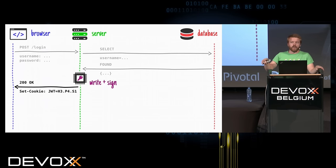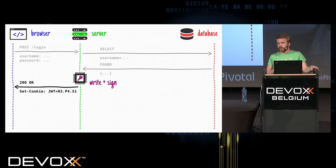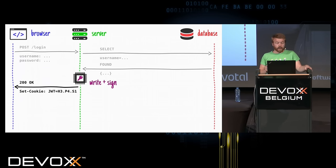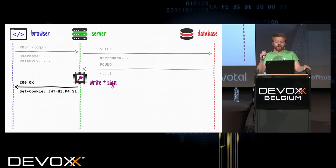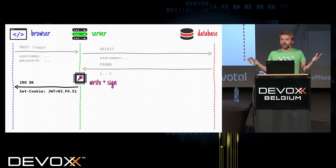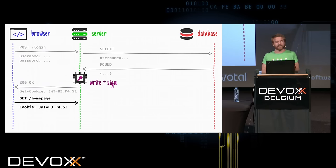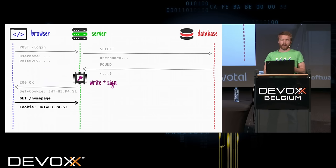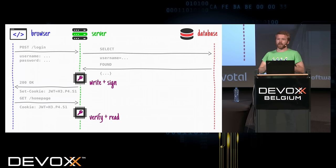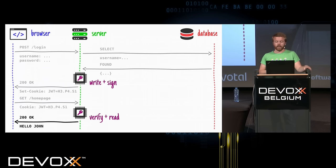I can use JWT with cookies? So all those articles were not that great. Yes, you can. What does a browser do when it has cookies? I'm a browser, what do I do? I send the cookies. So every time you navigate, the token is sent back. And then the only thing you need to do is verify first — you check the dollar bill is okay — and then read the information. It's John. Welcome, John.